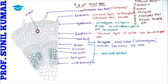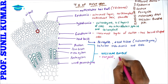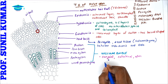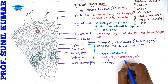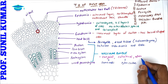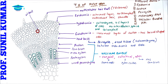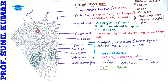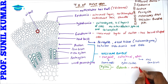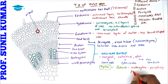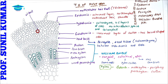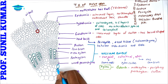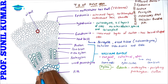The vascular bundle of the dicot stem is conjoint, collateral, and open. Conjoint means they are on the same radii; collateral means the xylem is in the center; and open means it has a cambium. In the case of the dicot stem it is endarch — the meta xylem is towards the periphery and the proto xylem is towards the center, which is the pith.